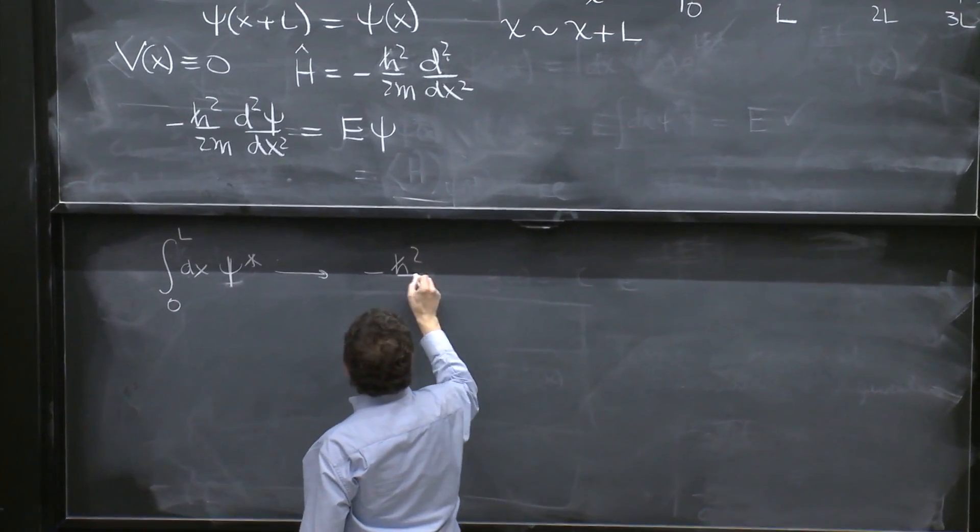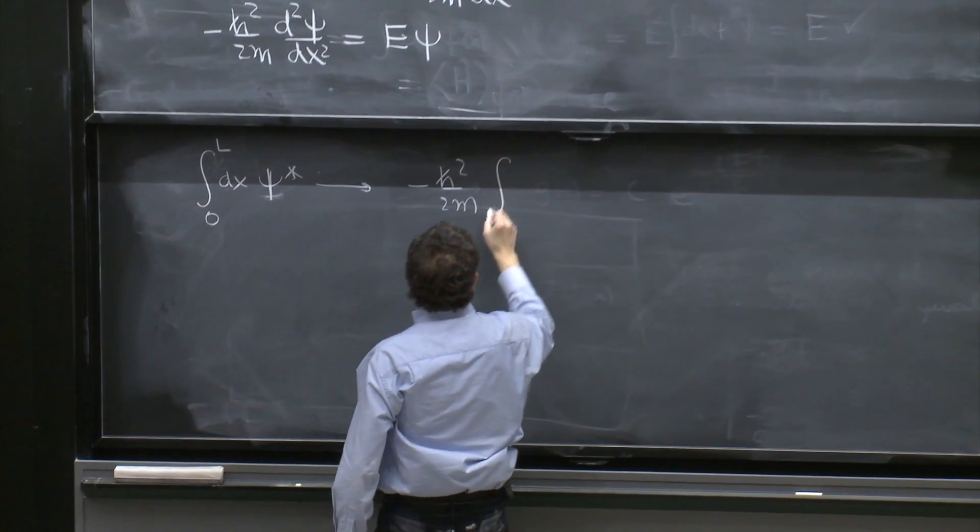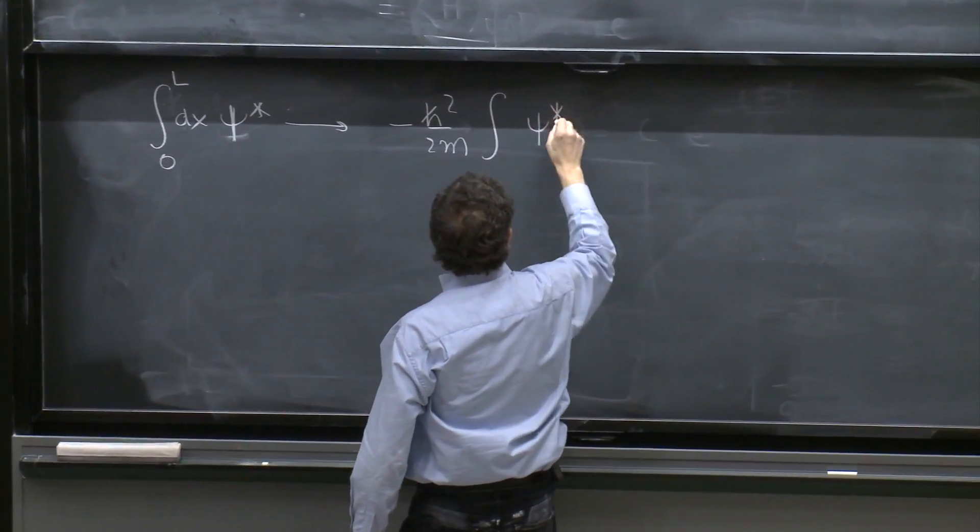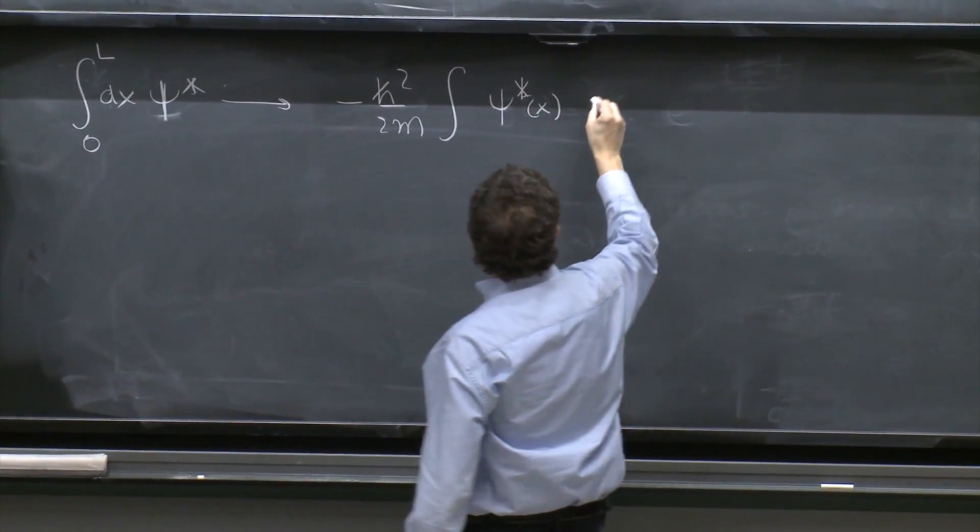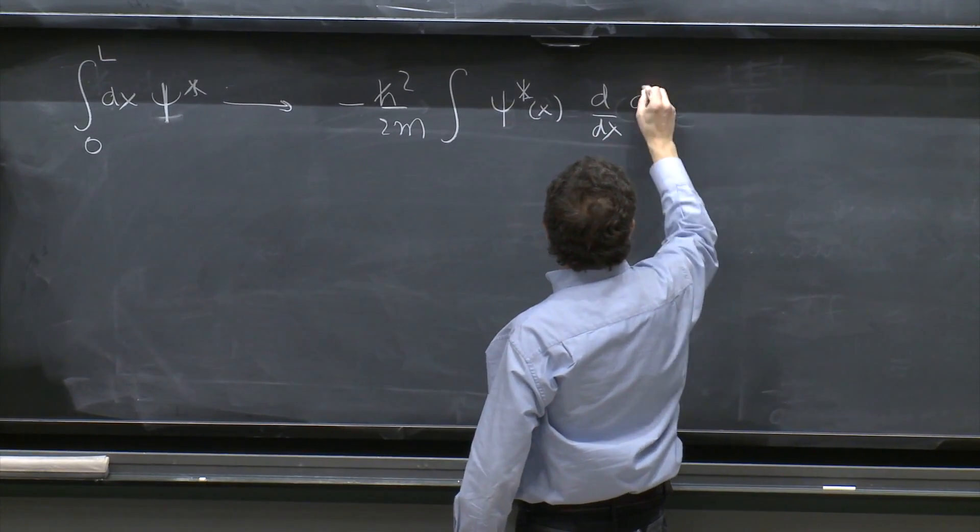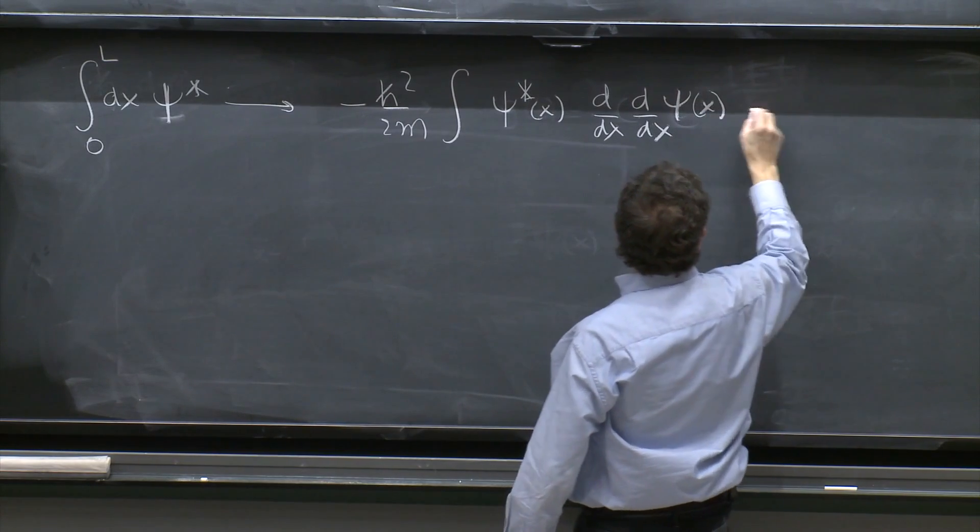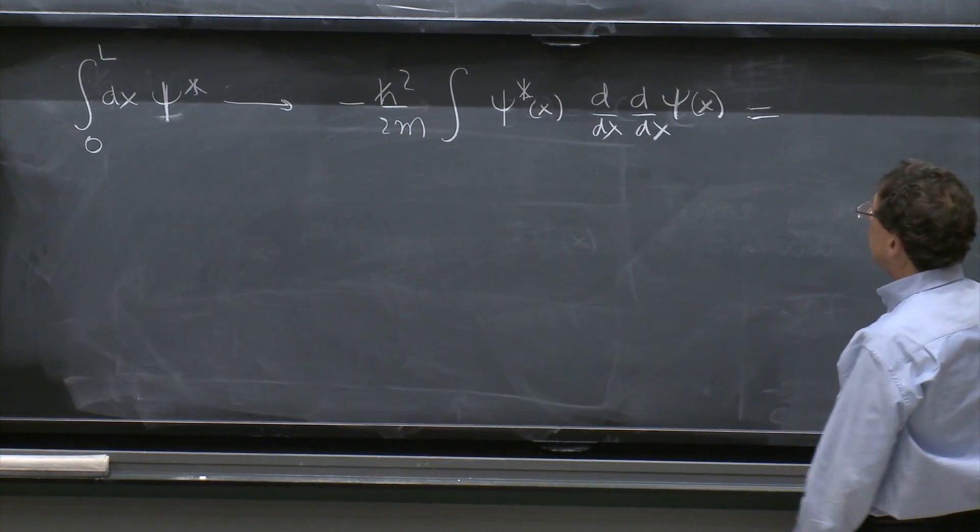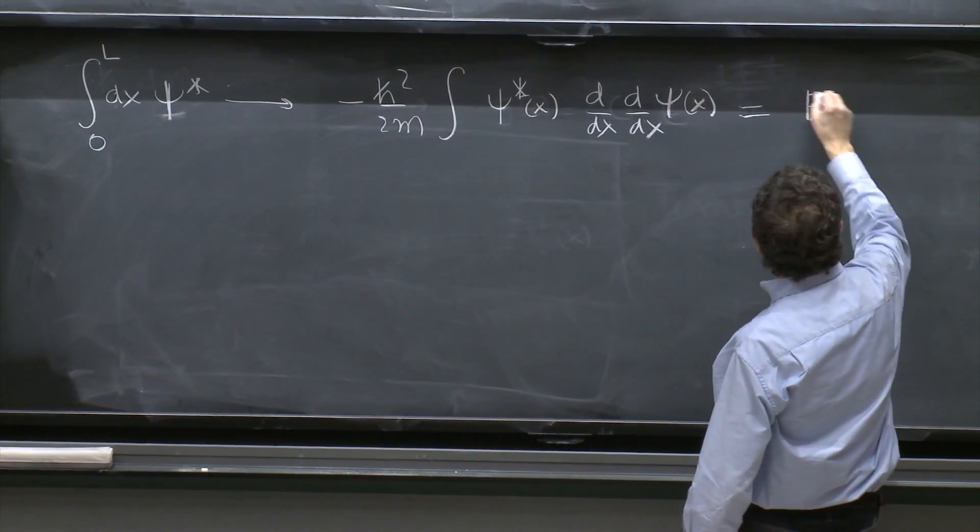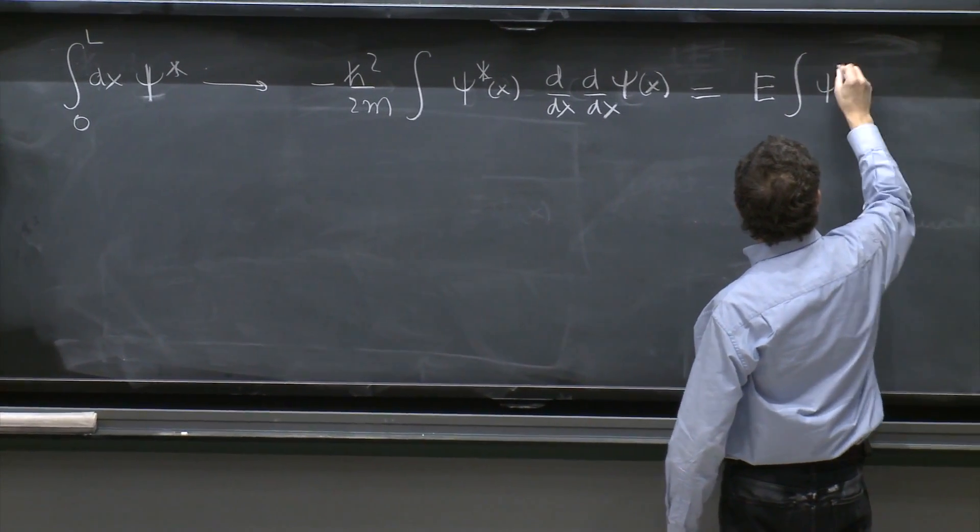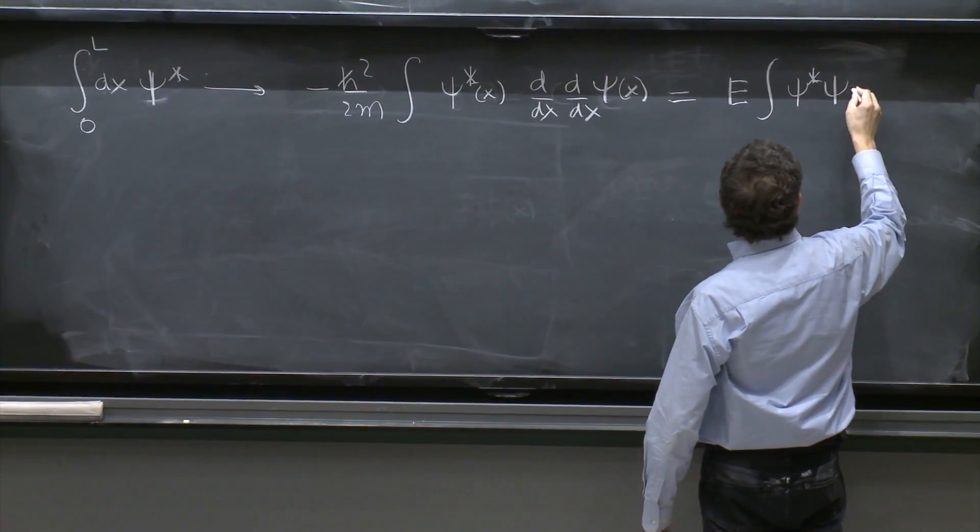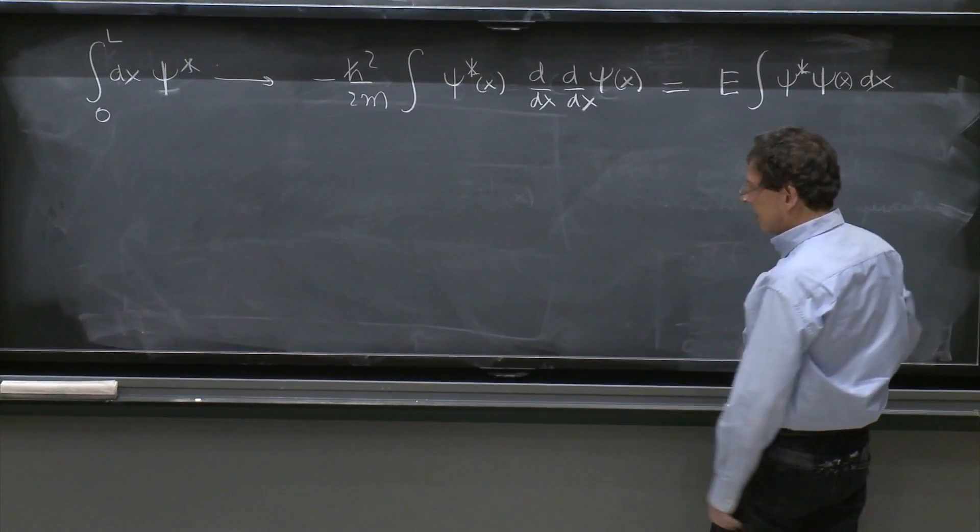So we do that on this equation. And what do we get? Minus ℏ squared over 2m integral ψ star of x d/dx of d/dx ψ of x is equal to E and the integral ψ star ψ of x d/dx of d/dx.